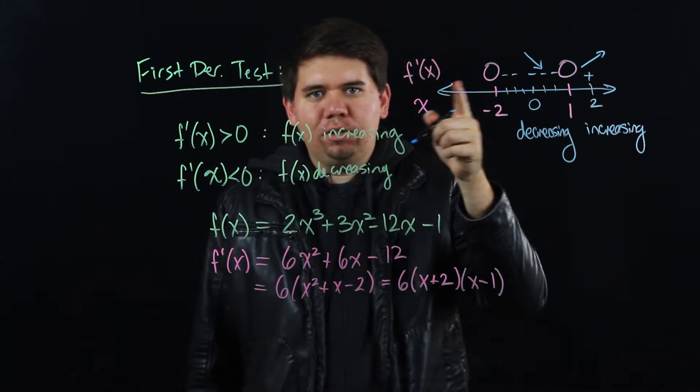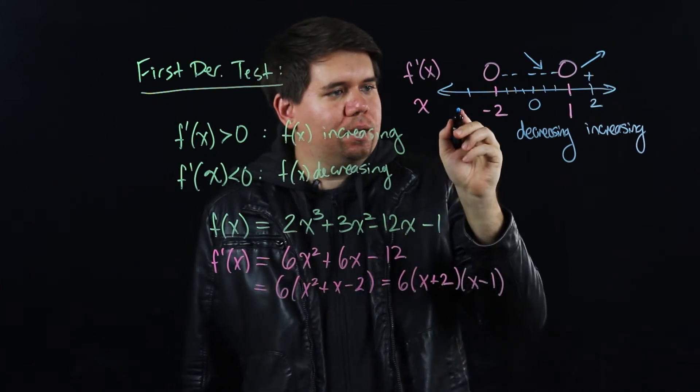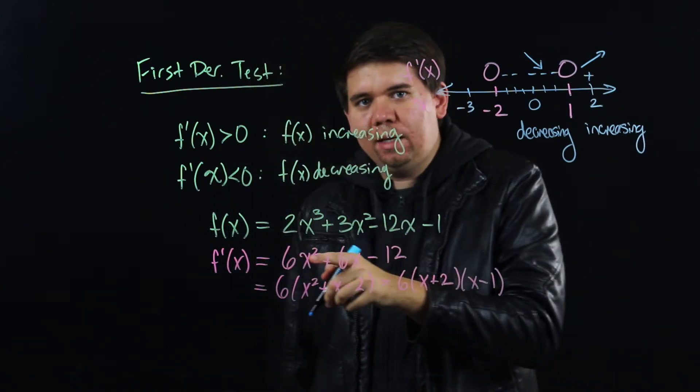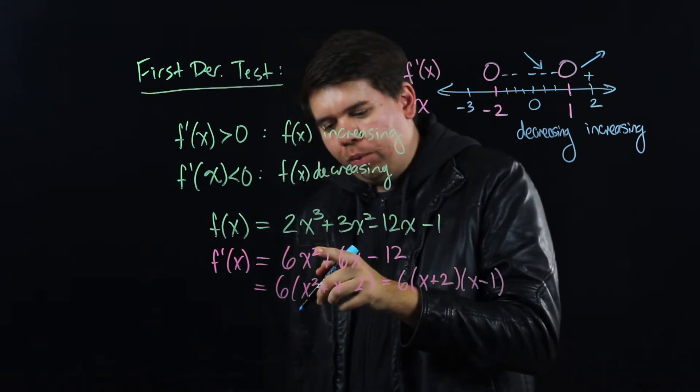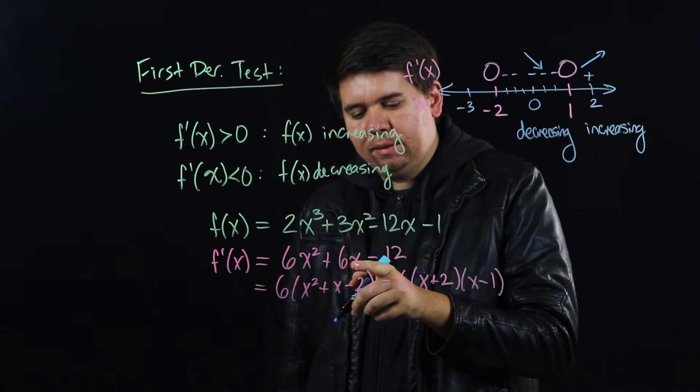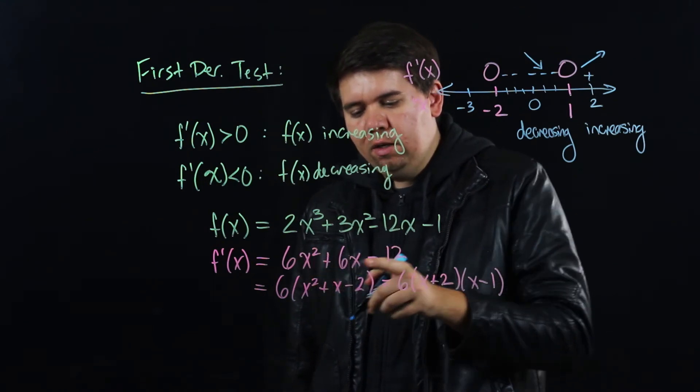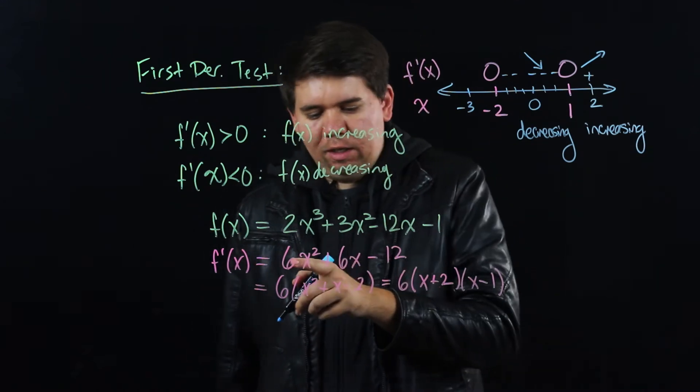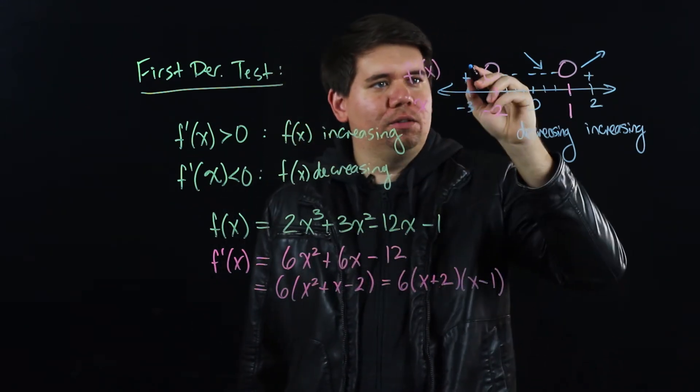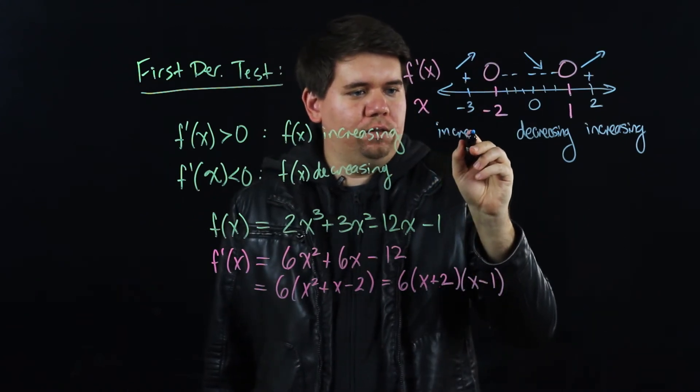And then we can do the last region we haven't tested yet. Let's pick some number smaller than -2, pick a number like -3. Plug -3 into your derivative. You square it becomes positive 9, so 54 - 18 - 12, so -30. Still a positive number. Still positive 24. So it's a positive value, so that's increasing. So your function was increasing.